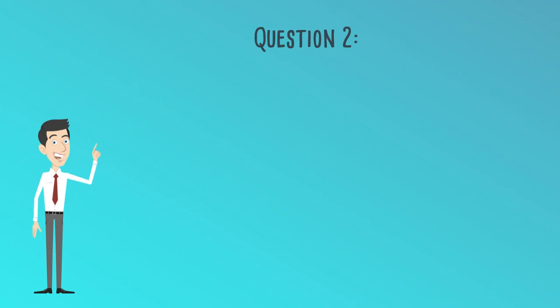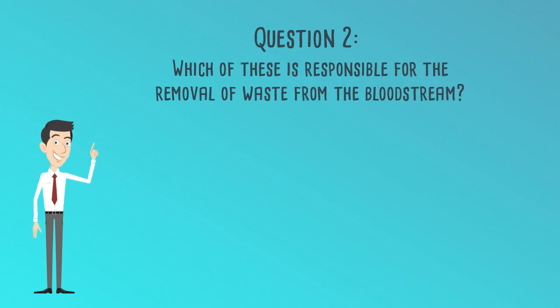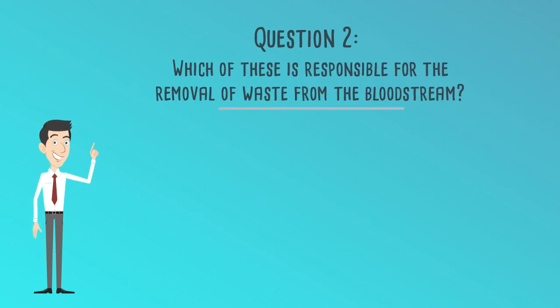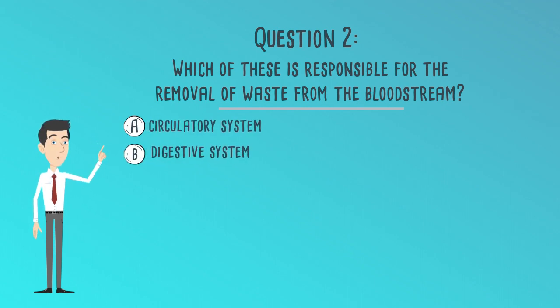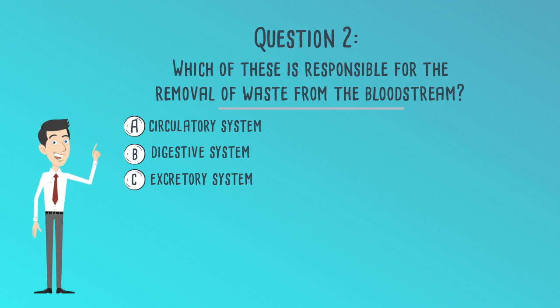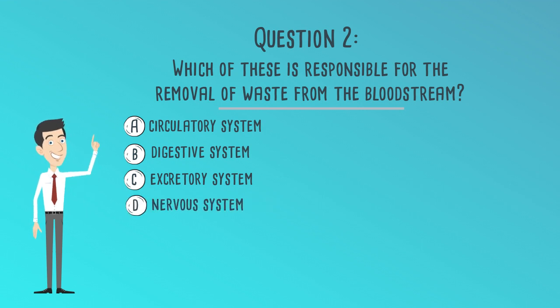Question 2. Which of these is responsible for the removal of waste from the bloodstream? A. Circulatory system. B. Digestive system. C. Excretory system. D. Nervous system.